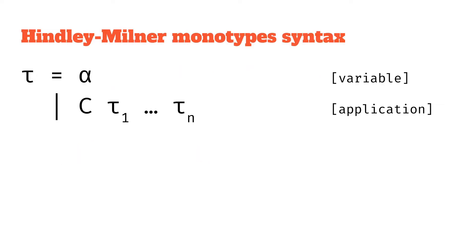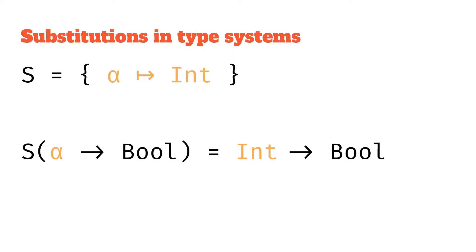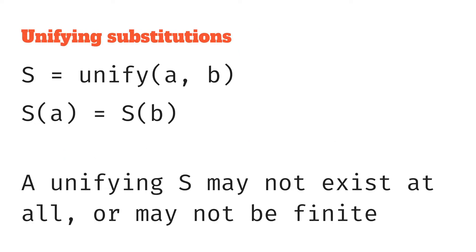We've also looked at Hindley-Milner types, specifically monotypes is what we're going to be dealing with in this video, and we've also looked at how those substitutions apply in type systems where we're going to be mapping from type variables to monotypes. We also looked at unifying substitutions and unifying substitutions in the context of type systems. These are substitutions where we've got two values a and b, and when we apply the unifying substitution to both a and b we get the same result.